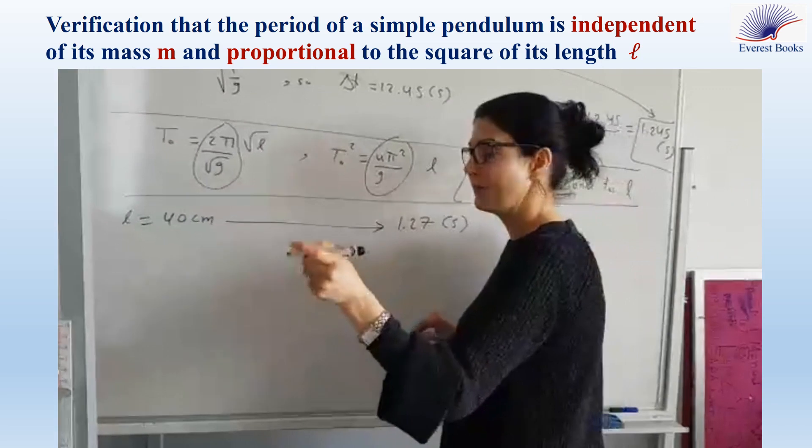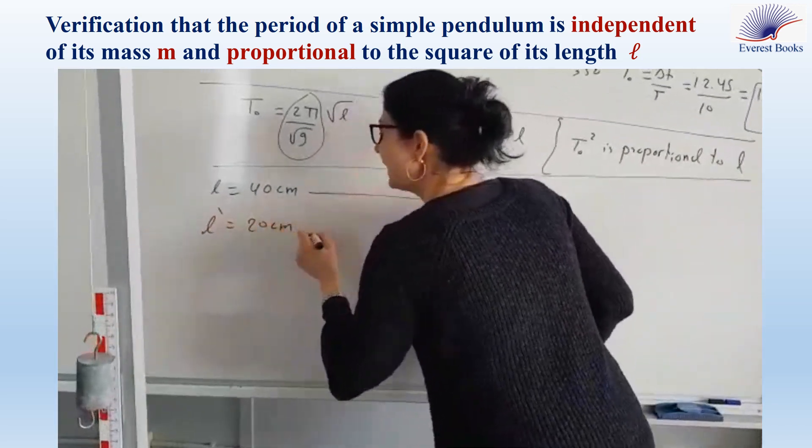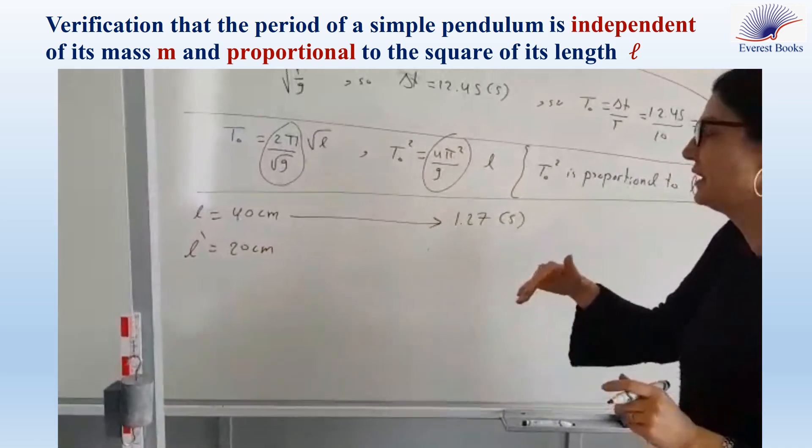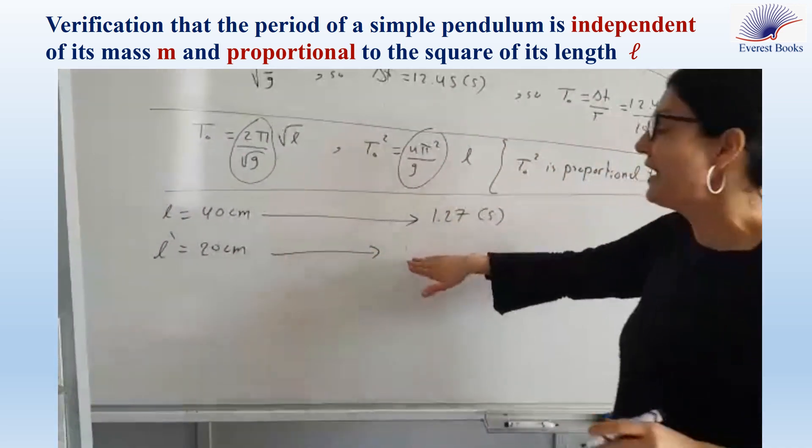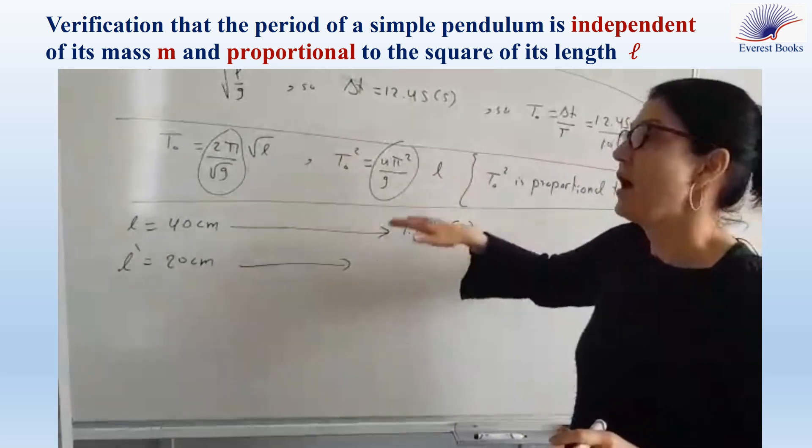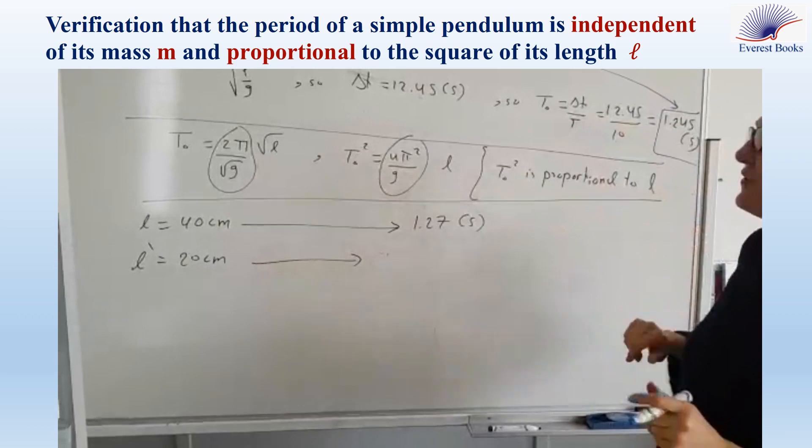Now, I will replace the cord by another one having half the initial length. So, the square of the new period must be half the square of the initial period.